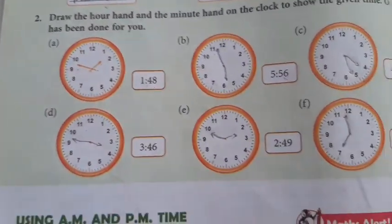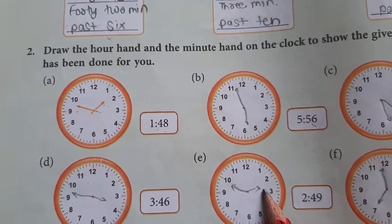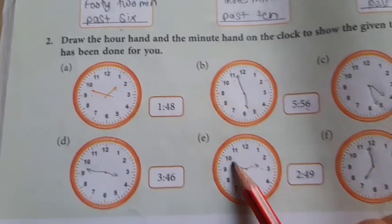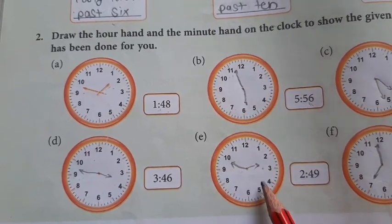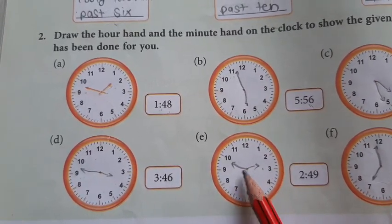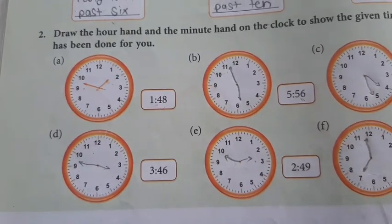Little bit further, then 2, 49. So 2, little bit further, 10. Little bit further, 9, little bit further.